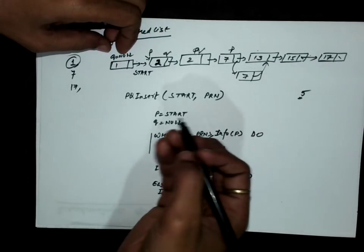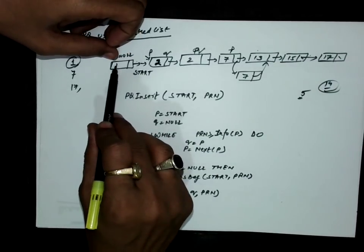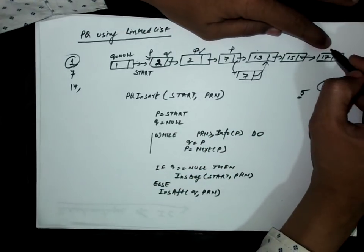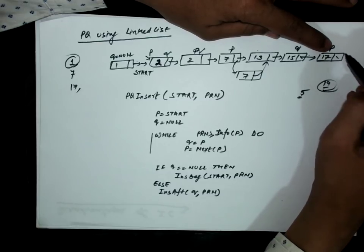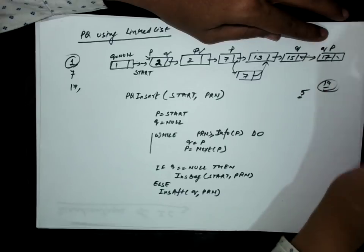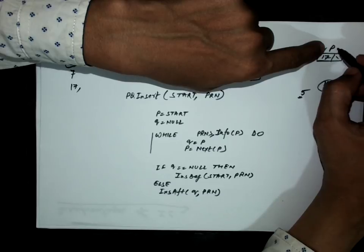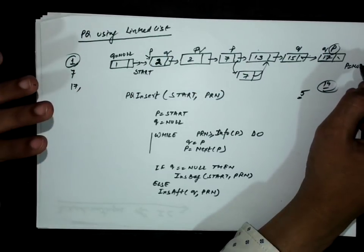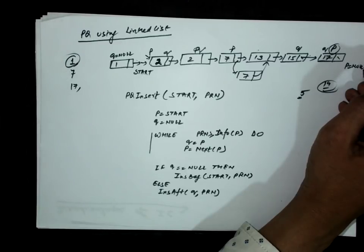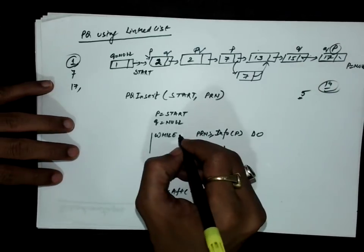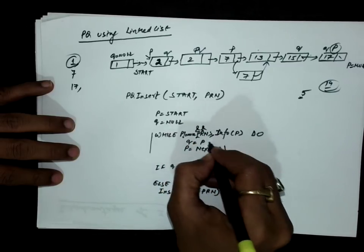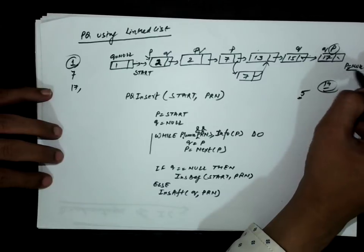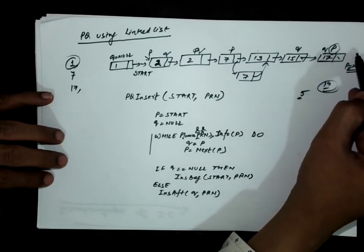Now suppose I have to insert 19. Since 19 is greater than all elements, P keeps advancing until P becomes null after the last node. The while loop condition should also check that P is not null: while P is not null AND PRN >= info(P). When P becomes null, I stop. Even in this case, I insert 19 after Q, which works correctly.